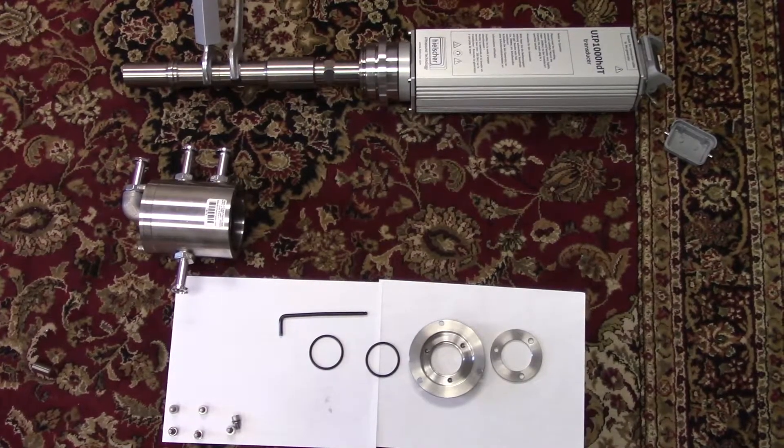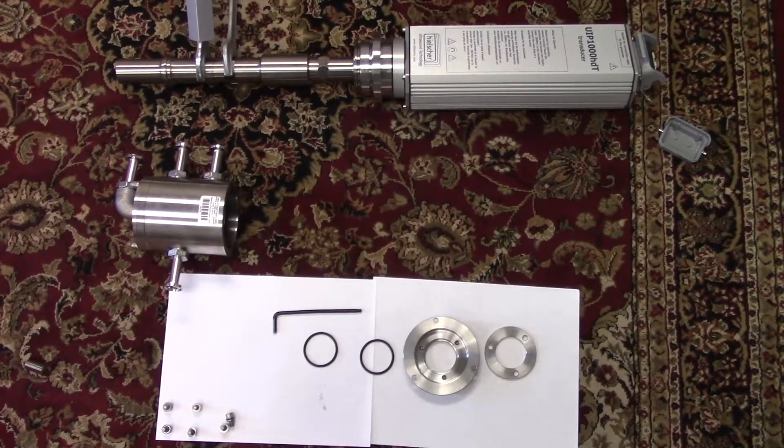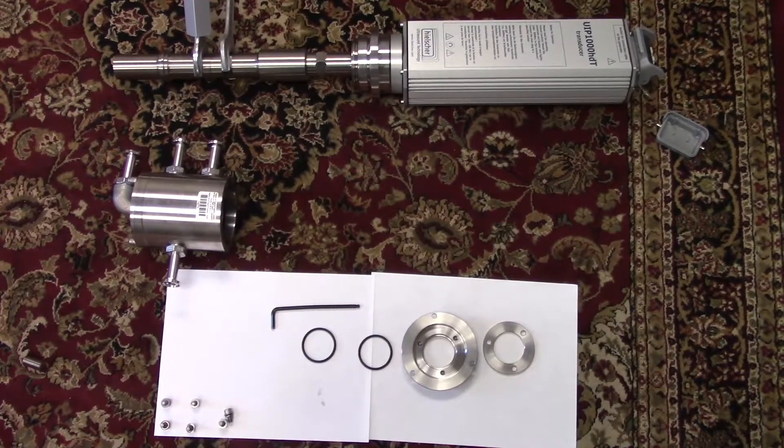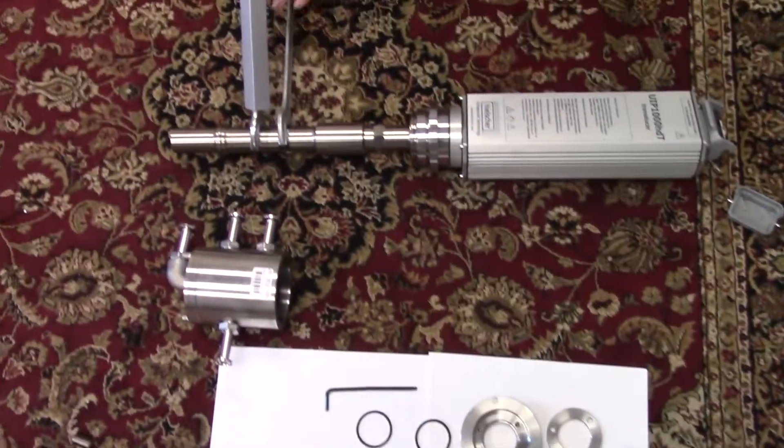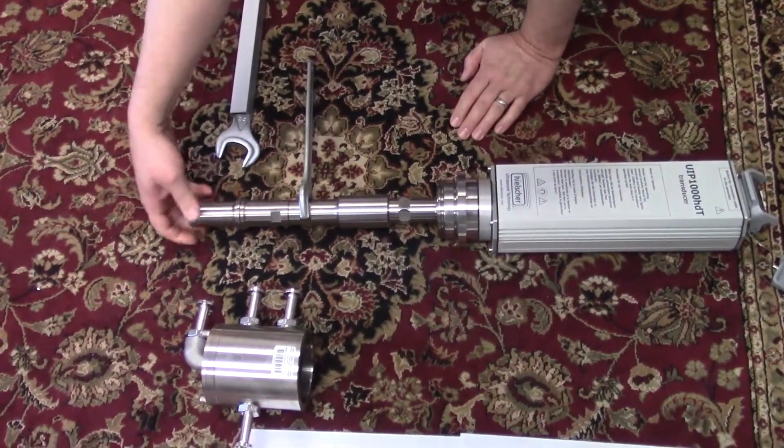Using the two wrenches and the cheater power ride, disassemble the sonotrode from the transducer, turning counterclockwise.